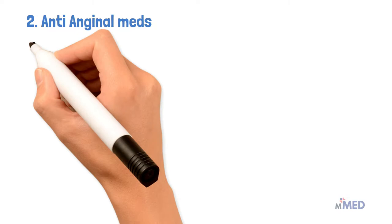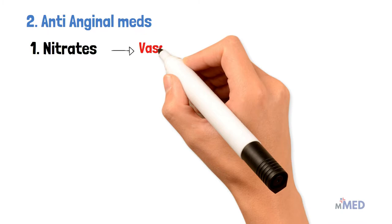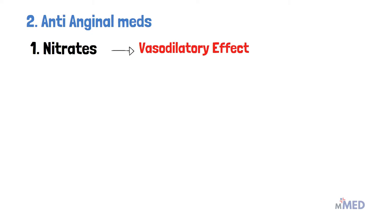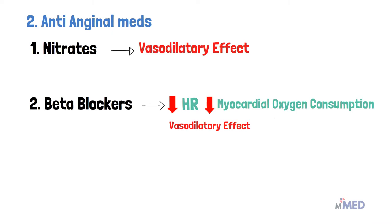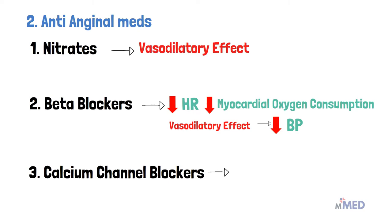The second type of medications are anti-anginal meds. Nitrates, beta blockers, and calcium channel blockers come under this. Nitrates have a very important vasodilatory effect and can allow more blood to pass into the heart. Beta blockers on the other hand have a negative inotropic and a negative chronotropic effect — they reduce the heart rate and reduce the myocardial oxygen consumption, and can also decrease the blood pressure by a vasodilatory effect.